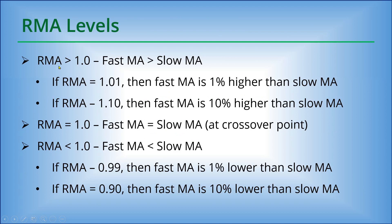When the relative moving average is greater than 1, the fast EMA — for example a 3 — is greater than the slow EMA, for example an 8. We can use a simple moving average, exponential, or weighted moving averages. If the RMA equals 1.01, then the fast moving average is 1% higher than the slow moving average, and if the RMA equals 1.10, then the fast moving average is 10% higher than the slow moving average. If the RMA equals 1, then the fast equals the slow moving average.